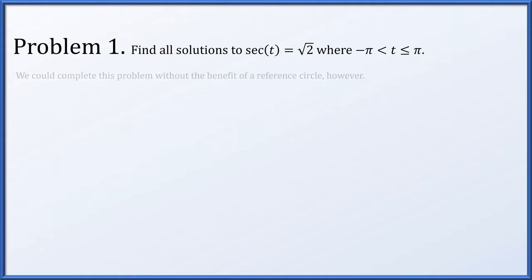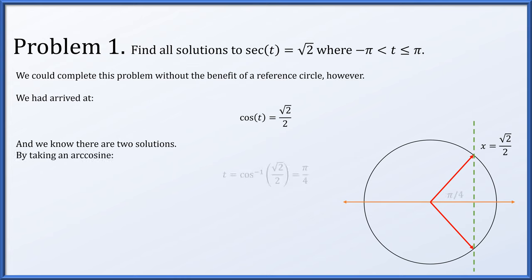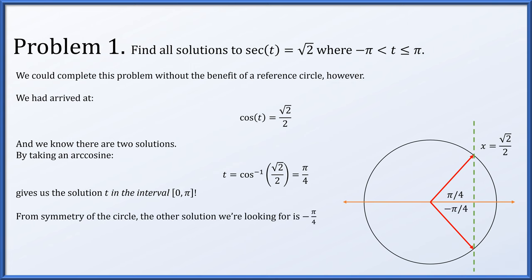There is another way to solve this problem without using a reference circle. We want cosine of t to equal root 2 over 2, so we draw the vertical line x equals root 2 over 2 and see it intersects the circle twice. Taking arc cosine gives t equals arc cos(root 2 over 2), which is exactly pi over 4 — the quadrant 1 solution. By symmetry, minus pi over 4 is the angle rotating downward, giving us our two solutions: plus or minus pi over 4.